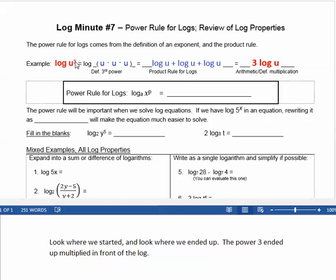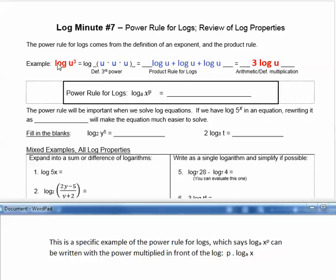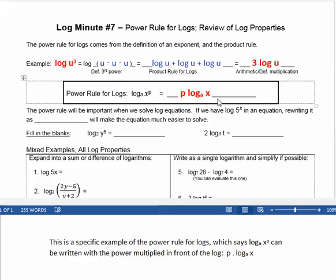The power 3 ended up multiplied in front of the log. This is a specific example of the power rule for logs, which says that log base a of x to the power p can be written with the power multiplied in front of the log: p times log base a of x.